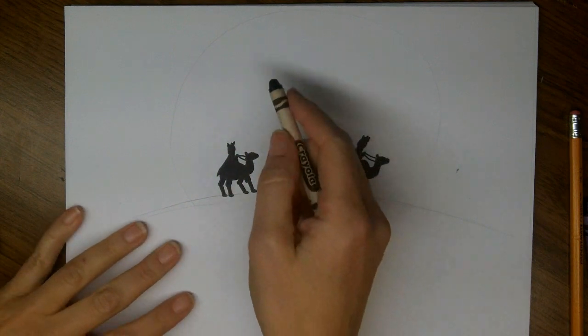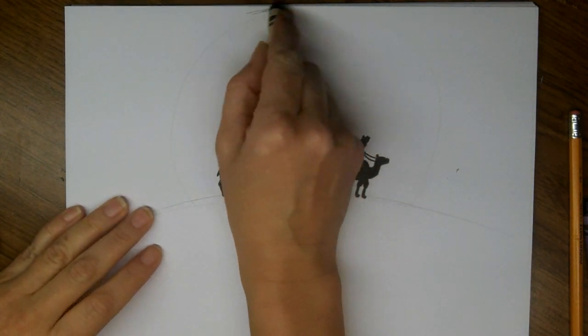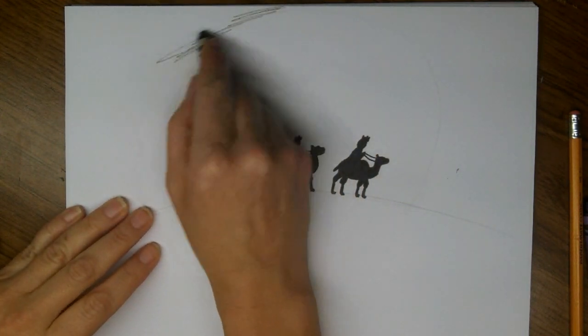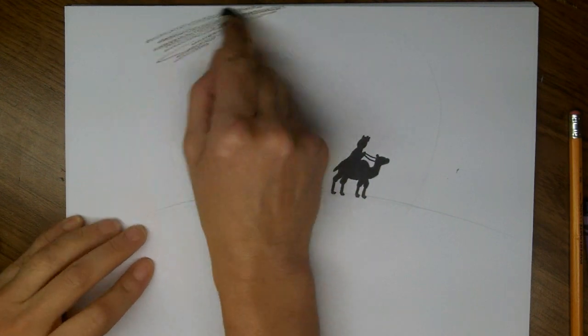And now we can start working on our background. So I have a black crayon, and I'm just going to faintly cover the whole area behind the moon.